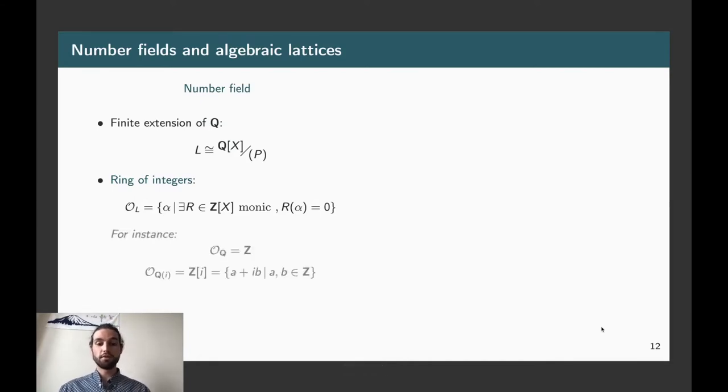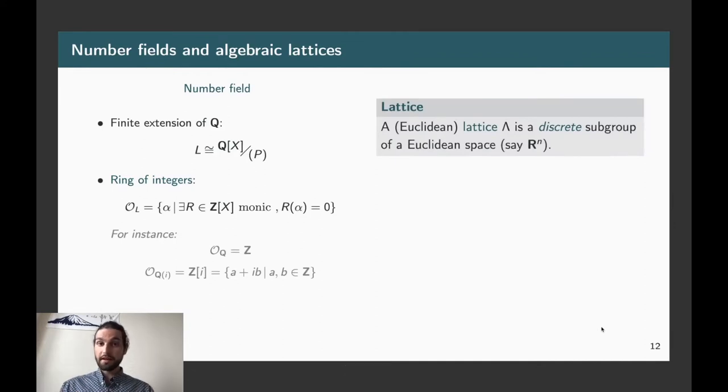So for instance, if you take the most basic number field of all, which is Q itself as an extension of degree one over itself, then the ring of integers recovers the actual integers, rational integers. If you take something which is slightly bigger, so let's say a quadratic extension, for instance, Q(i), then the ring of integers of Q(i) is nothing else but the Gaussian integers, which are defined as Z[i], which are the elements of the form A plus iB for A, B integral elements. So recall that a bit earlier, we defined a lattice as being a discrete subgroup of Euclidean space. And in fact, we gave a slightly more general definition, which was to take a free Z module of finite rank endowed with some inner product over the ambient space.